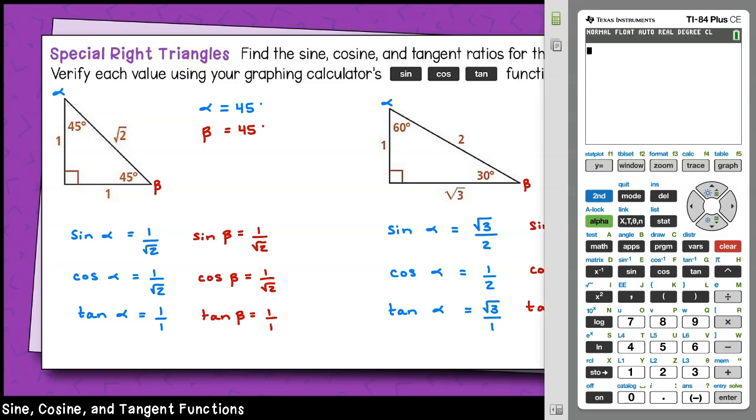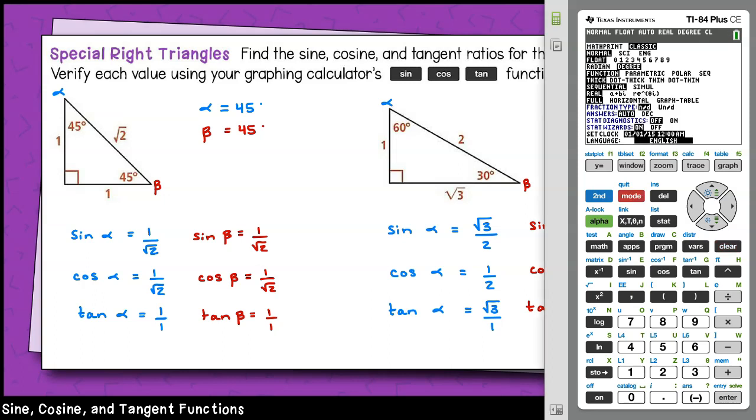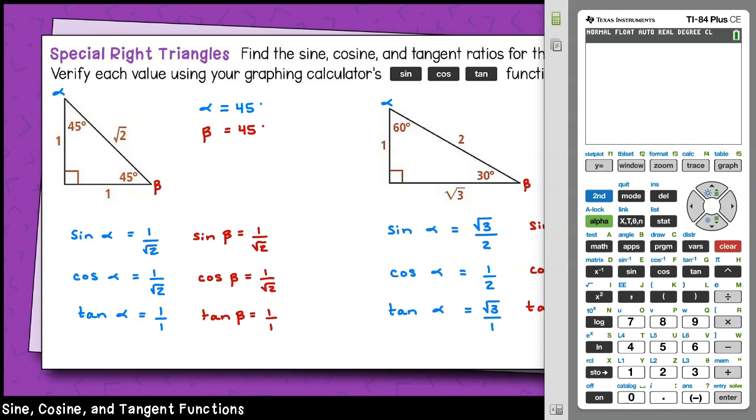On the TI calculator, the buttons sine, cosine, and tangent can be used on the main screen. You will need to ensure that your calculator is set in degrees mode by hitting mode, and then use your cursor to verify that degree is highlighted. Hit enter over the word degree to select it, then hit clear to go back out to the main screen.